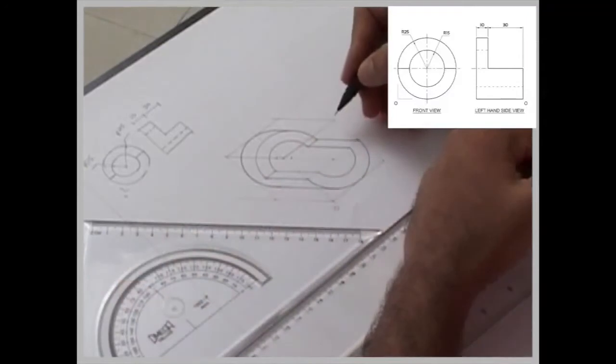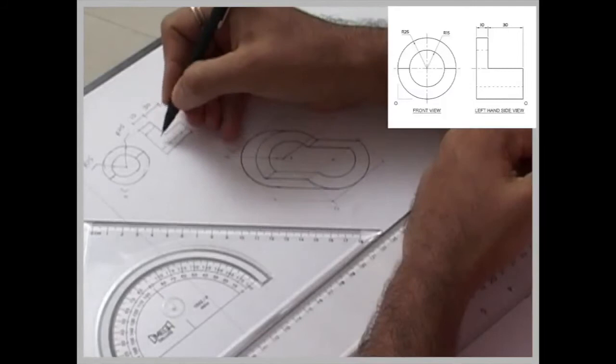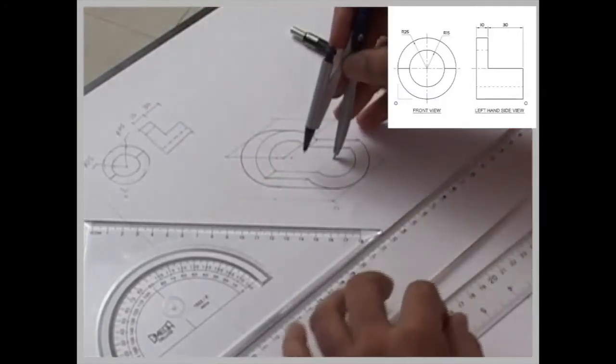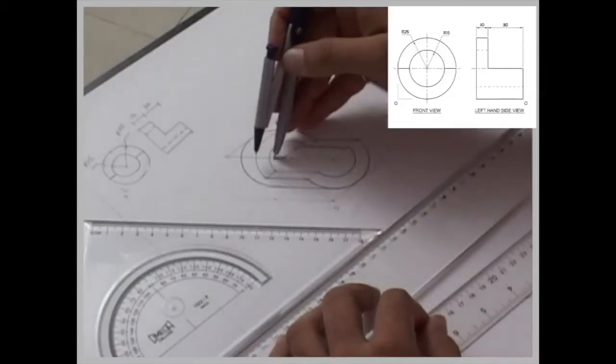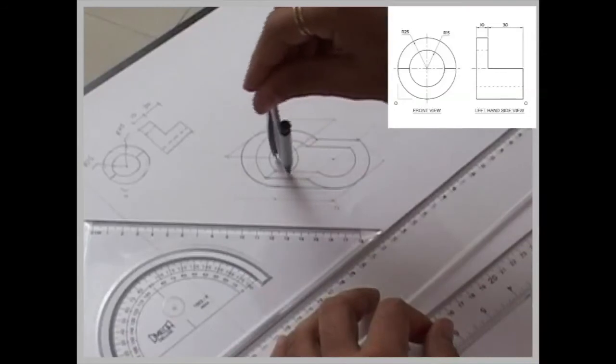Now in this case we have to show a smaller circle as well. But if you see this, the smaller circle is through and through. So what we will do, we will take this radius, we will go 40 behind and draw this.